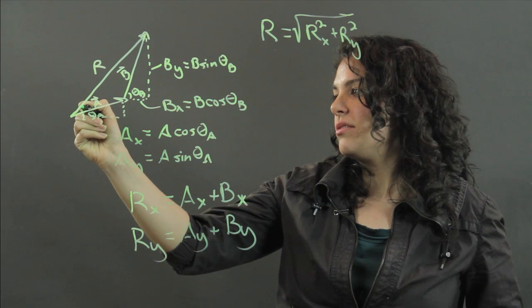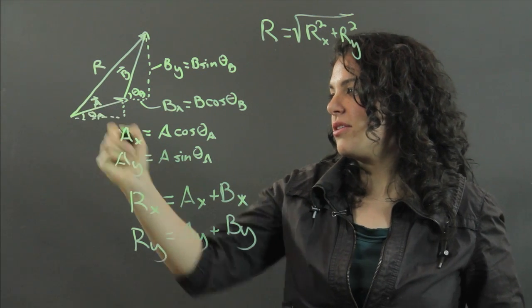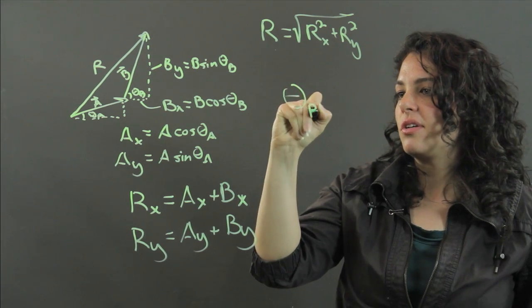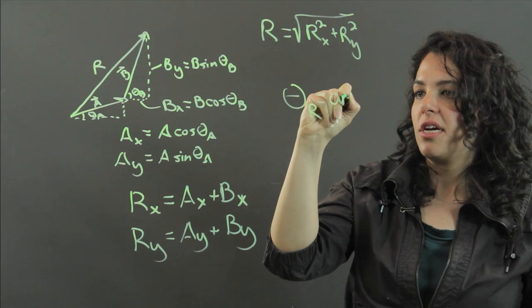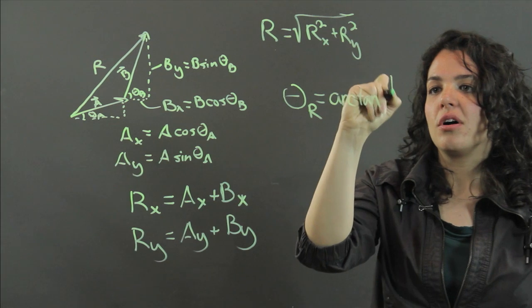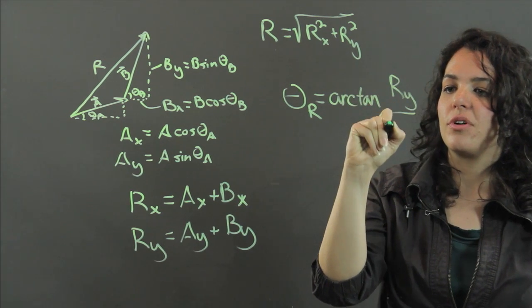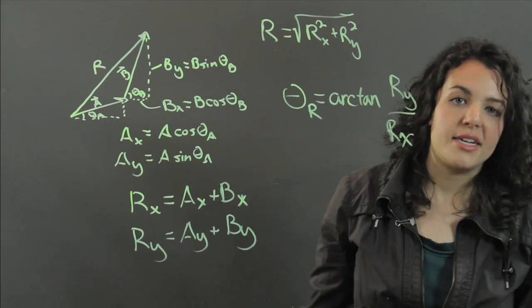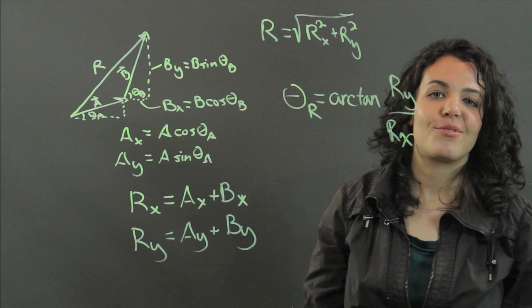And then to get the angle, this angle here for r, theta of the resultant is the arc tangent of r sub y over r sub x. And that's how you get the resultant. Thanks for watching.